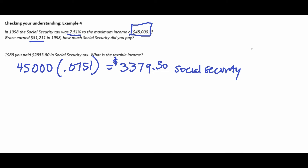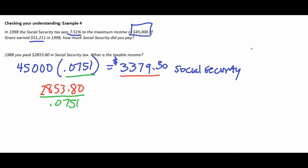The last part of example four works in reverse: in 1998, you paid $2,853.80 in Social Security tax. Since this is less than the cap of $3,379.50, the income is under the cap. To find taxable income, divide by 7.51%: $2,853.80 ÷ 0.0751 = $38,000. This is less than the $45,000 cap, which confirms our assumption.